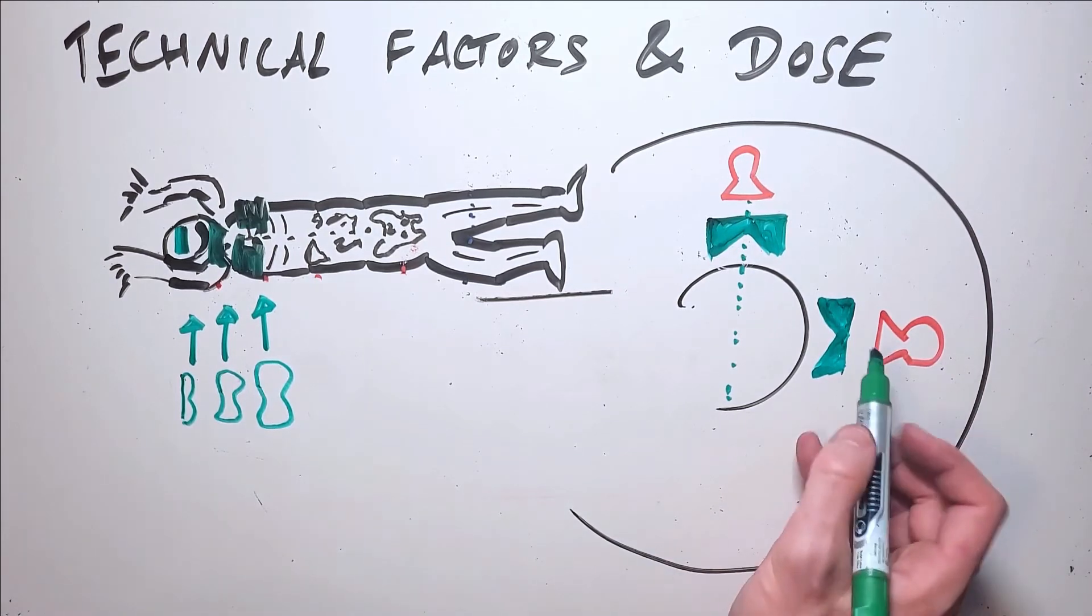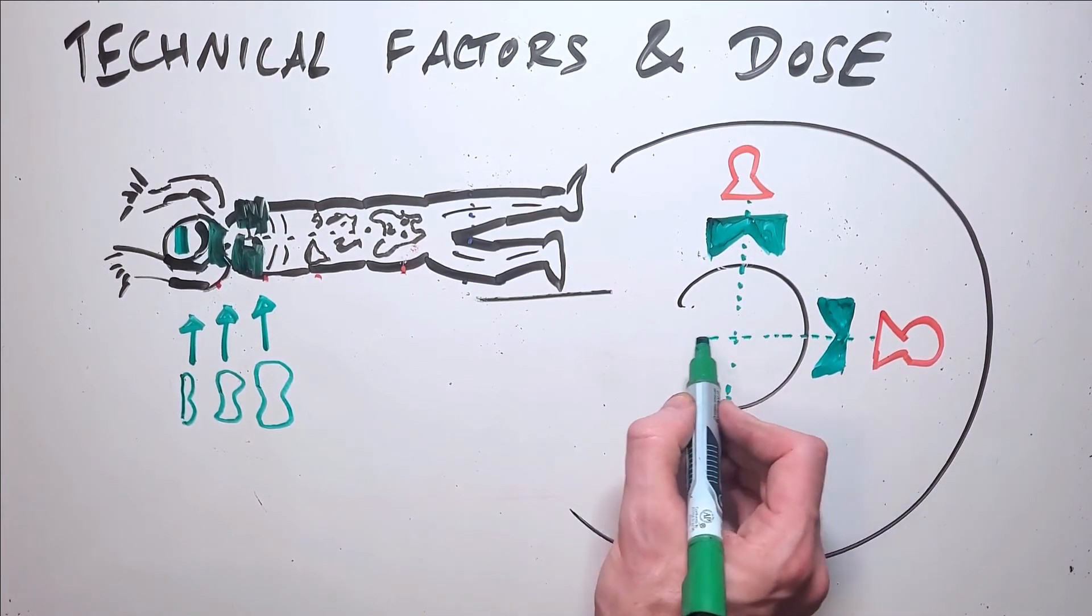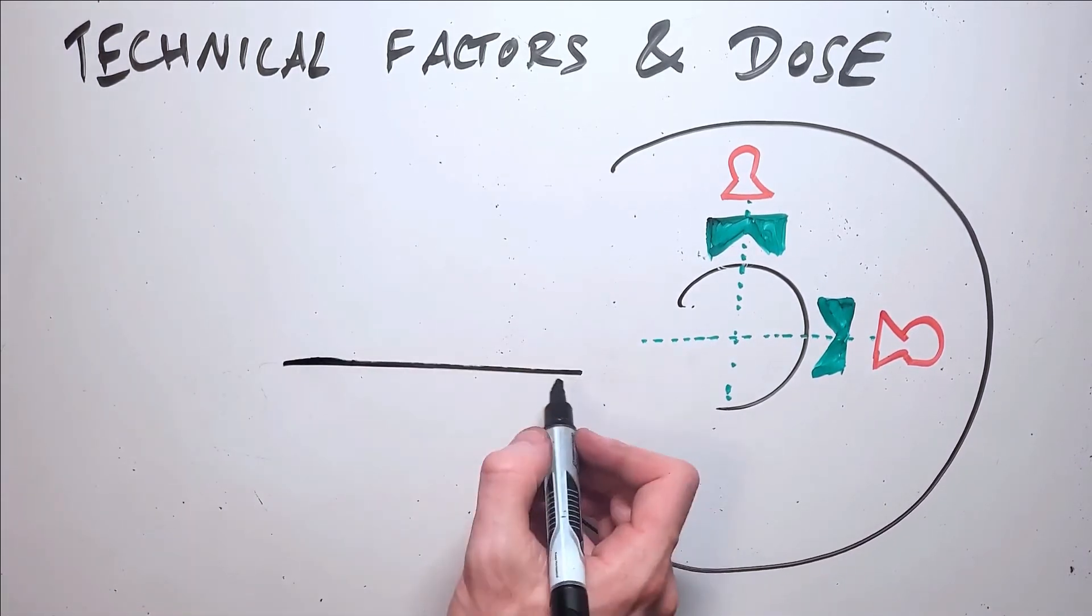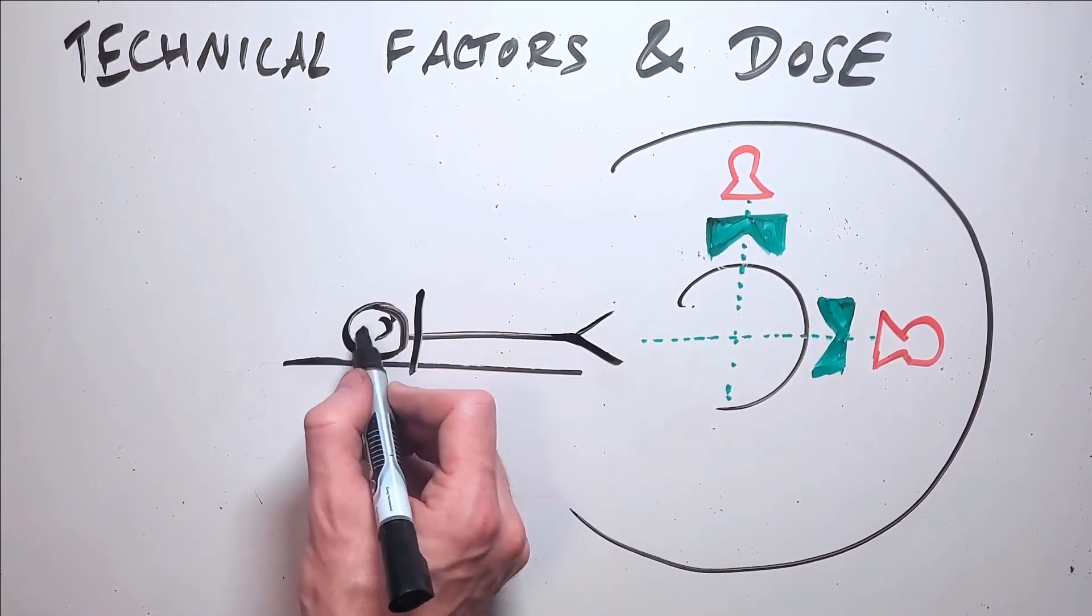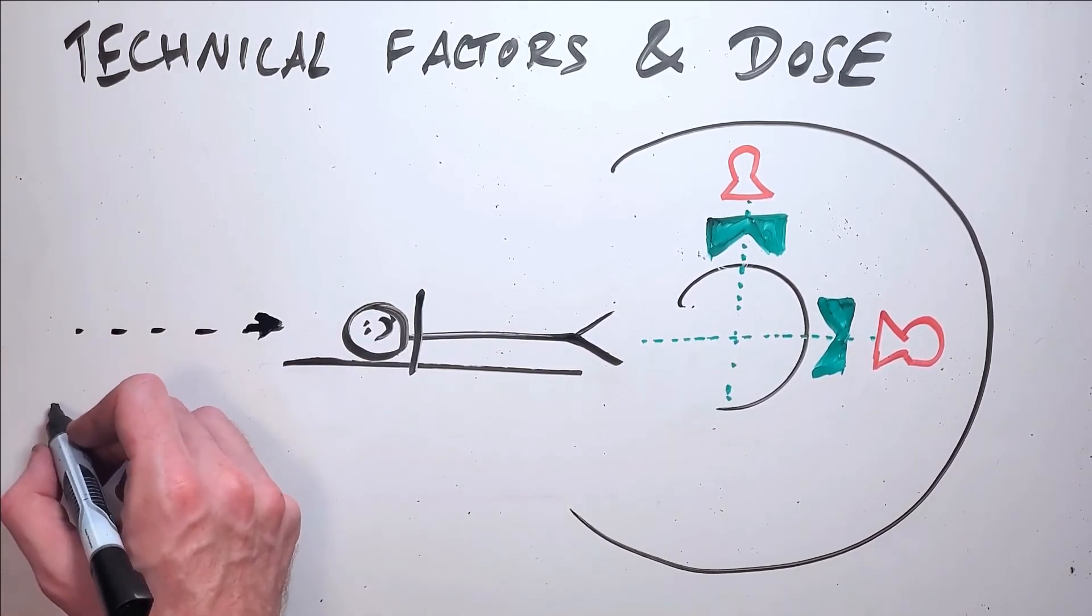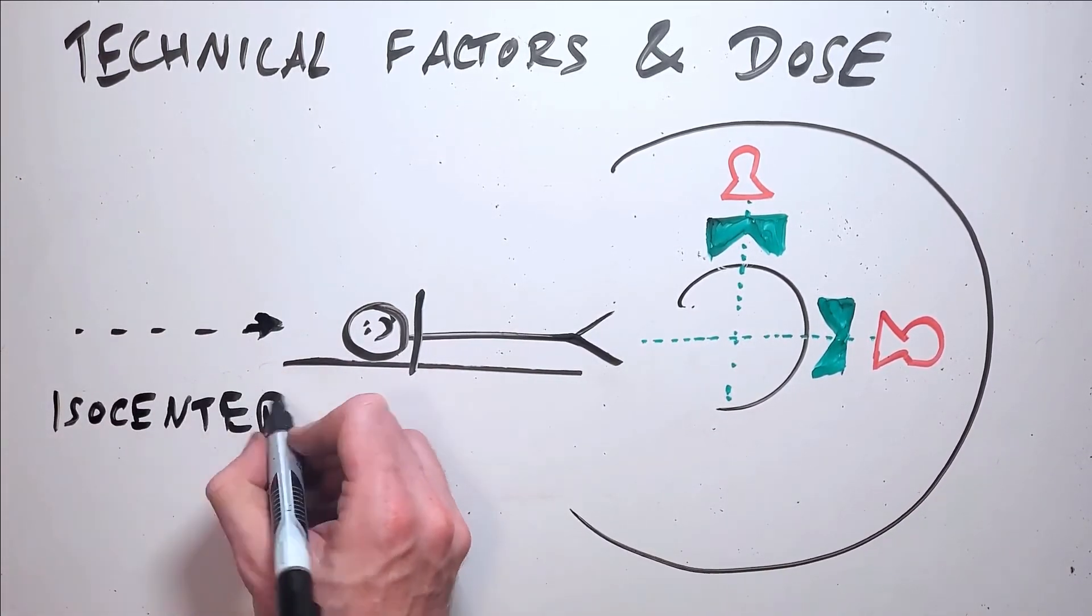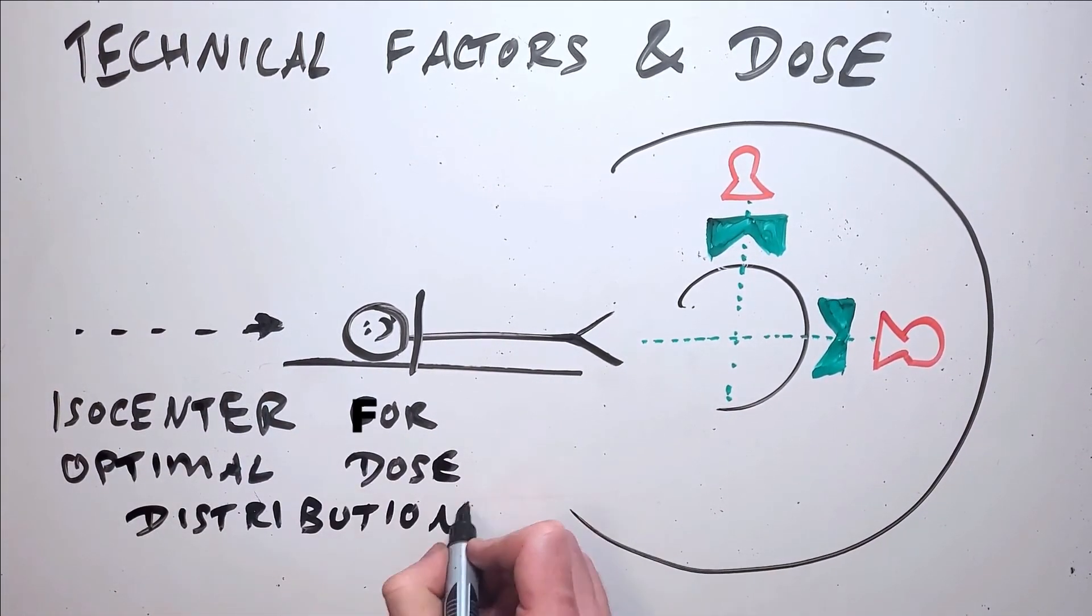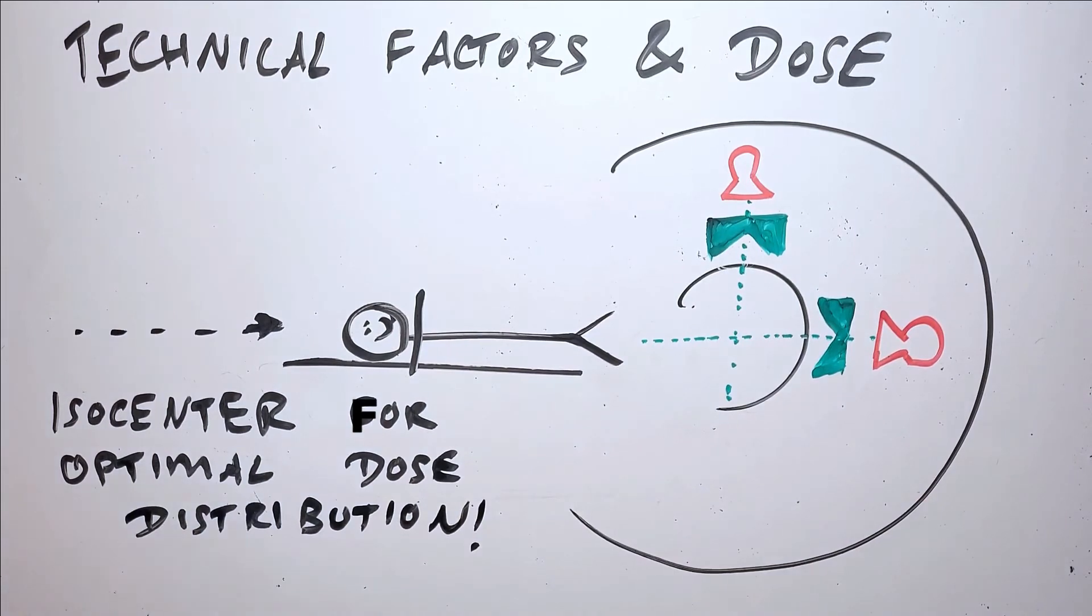Because the bowtie filter is designed to have a central point in the isocenter of the gantry, it's really important to position the patient right in the isocenter of the gantry, meaning that they're in the middle of the table widthways and also in the middle of the gantry in the up-down direction. If not properly isocentered in the gantry, the dose will not be distributed uniformly and certain areas of the patient may be starved of necessary dose while other areas receive excessive dose.